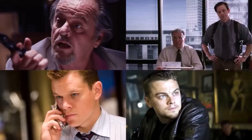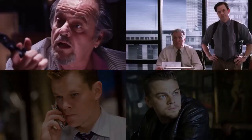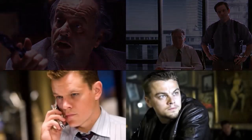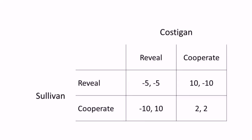Overall, the goal of both Costello and the SIU is to protect their informant, whereas Costigan and Sullivan are trying to find out each other's identities. Let's start with the simultaneous game between Sullivan and Costigan. Here's your typical prisoner's dilemma: both players have two strategies — to either reveal their opponent's identity or to cooperate and play their superiors. Both would be better off by cooperating, but that'll never happen because each player has a dominant strategy to reveal the other's identity.